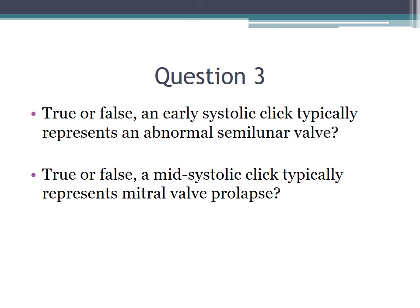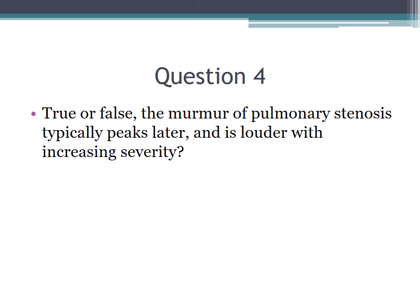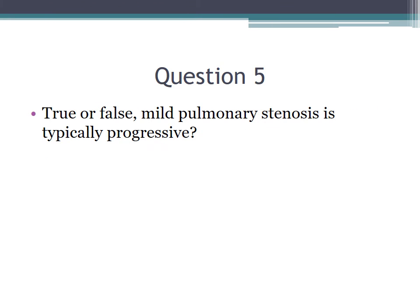True or false: an early systolic click typically represents an abnormal semilunar valve. True. True or false: a mid-systolic click typically represents mitral valve prolapse. True. True or false: the murmur of pulmonary stenosis typically peaks later and is louder with increasing severity. True. True or false: mild pulmonary stenosis is typically progressive. False — mild pulmonary stenosis is non-progressive, whereas aortic stenosis tends to be progressive.